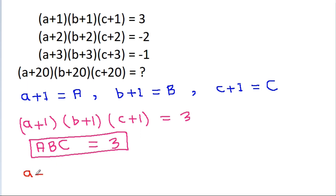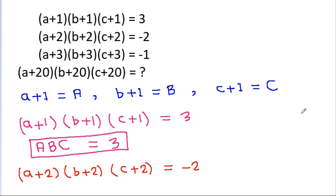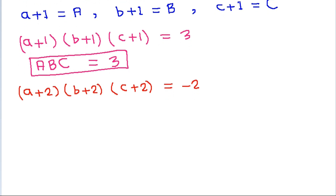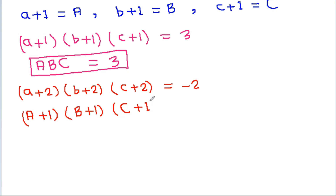And we have (a+2)(b+2)(c+2) equal to minus 2. Now a+2 will be capital A+1, b+2 will be capital B+1, and c+2 will be capital C+1, so (A+1)(B+1)(C+1) is equal to minus 2.